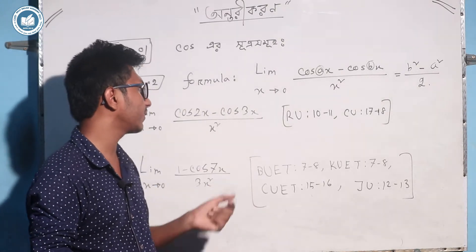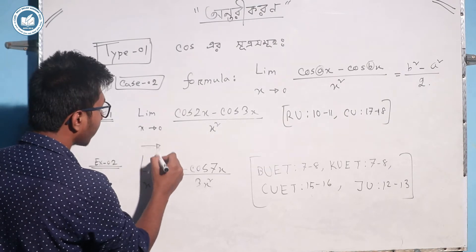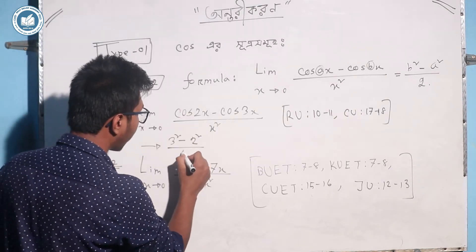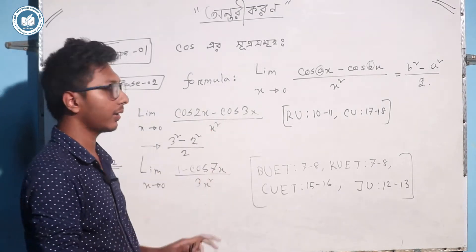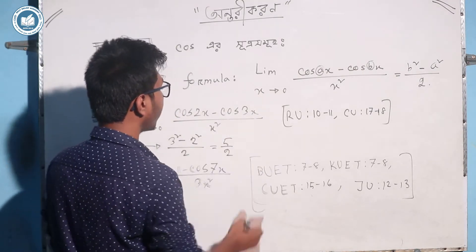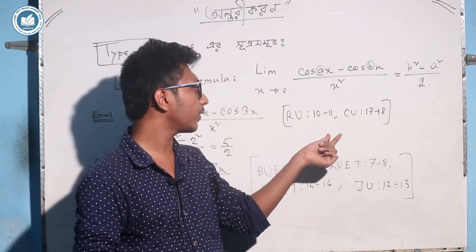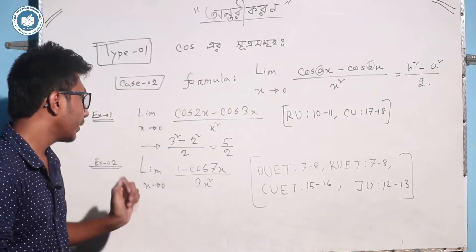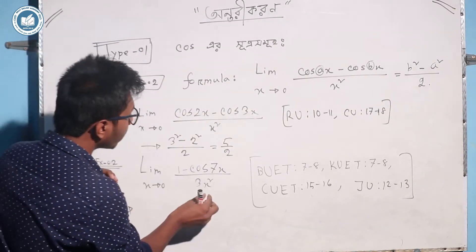Look at this — we will have 2 math. Cos 2x minus cos 3x by x squared. So we will have 2. The reason we need 2: this is 1. Let's find the situation of cos 3 is 1. Let's use this. In this case, what should be done? I use this way.